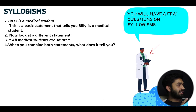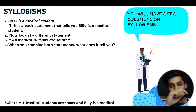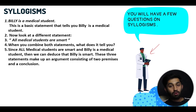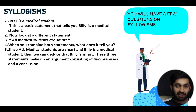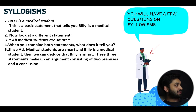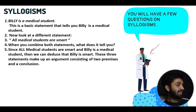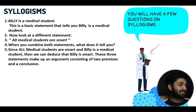What happens if we combine these two statements? What does it tell us? It tells us that since all medical students are smart and Billy is a medical student, then we can deduce that Billy is smart. These three statements — Billy is a medical student, all medical students are smart, and Billy is smart — make up an argument consisting of two premises and a conclusion.